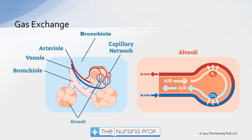For gas exchange, zooming in to the capillary network and one alveolus, you can see the arterial side going out to the capillary network and the venule coming back. Looking at the picture on the right, blood comes in, drops off its CO2, picks up its O2, and goes back to the left side of the heart.